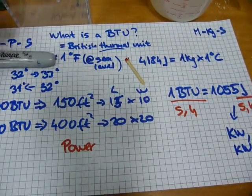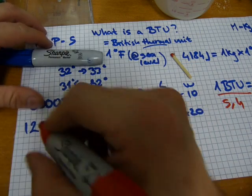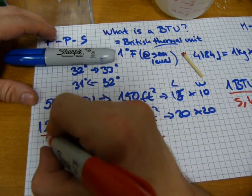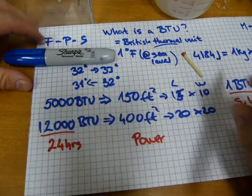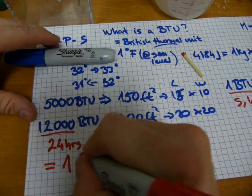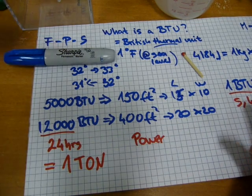With BTUs, you get a ton of cooling, and this is how you do it. When 12,000 BTUs amount of heat is being transferred in 24 hours, then one ton is the rate of cooling or heating.